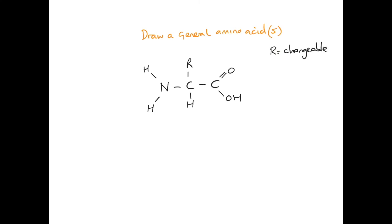The R group is an interchangeable group. R is not an element, it just represents 20 naturally occurring groups that define the amino acid. Depending on the R group, the behavior of the amino acid changes.